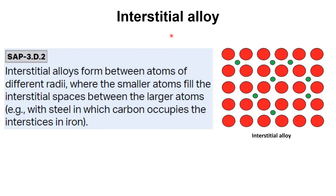The second kind is the interstitial alloy, which is made from two or more elements where there is a large difference between the atomic radii. For example, steel is made up of iron and carbon — there is a significant size difference between iron and carbon atoms. The red dots are iron atoms, and the green dots representing carbon occupy the empty spaces between the larger iron atoms, leading to the formation of an alloy.